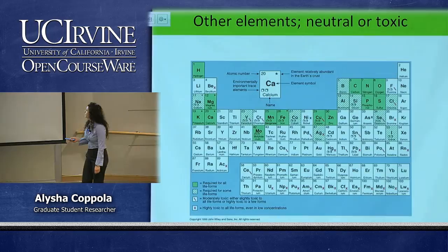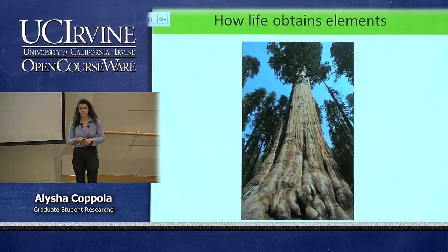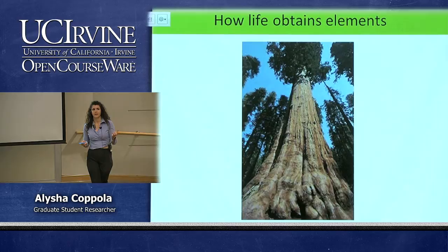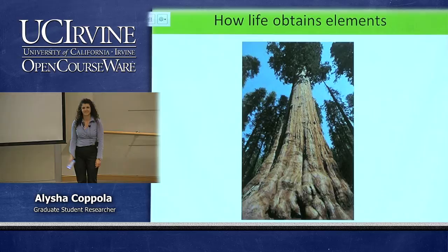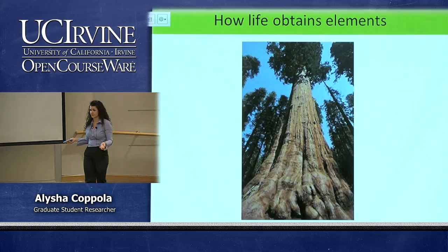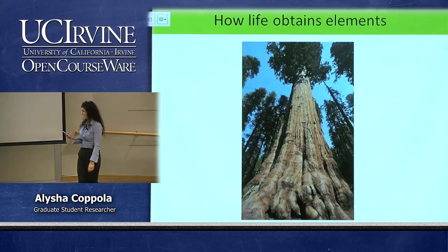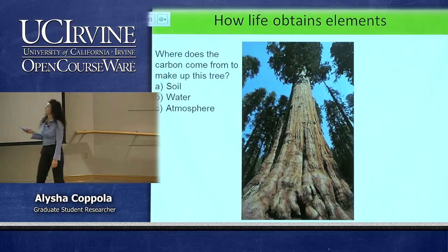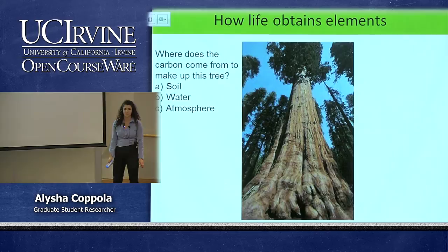For life to grow and have energy it needs the right amount of micronutrients and macronutrients, supplied at the right time and in the right relative concentrations. Take sequoia trees — they're enormous, up to 300 feet tall and 50 feet in diameter. The question is: how do they get all their nutrients from the atmosphere, biosphere, and geosphere to create this huge structure? Where does the carbon come from — the soil, the water, or the atmosphere?